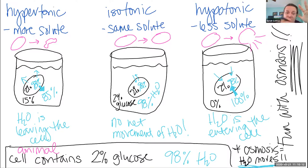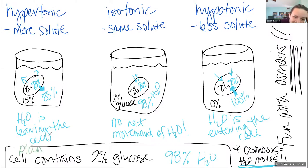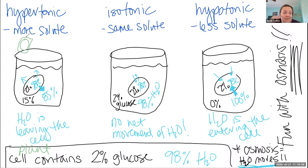Now I'm going to erase the animal part and imagine it's a plant cell — I'll use green. Now we're talking about a plant cell instead of an animal cell. Aside from having chloroplasts, what's another significant difference between plant cells and animal cells? Cell wall. So here's my cell inside of a box — the cell wall is outside of the plasma membrane, it's like a box. If I have my cell sitting in a box and put it in a hypertonic solution, what's going to happen?